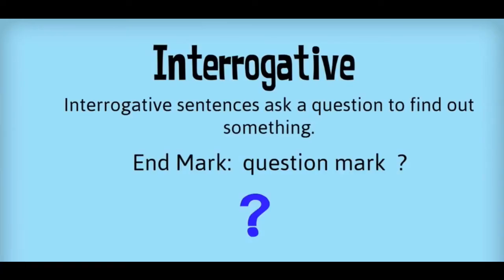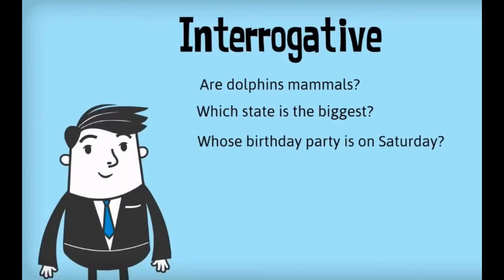Now let's talk about the second kind of sentence — interrogative sentences. Interrogative sentences ask a question to find out something. They are like questions and their end mark is a question mark. Like 'Are dolphins mammals?', 'Which state is the biggest?', 'Whose birthday party is on Saturday?' In all these we have asked something and added a question mark.